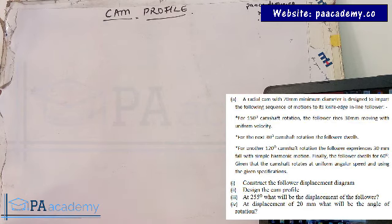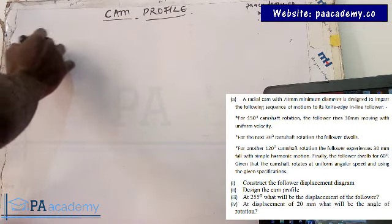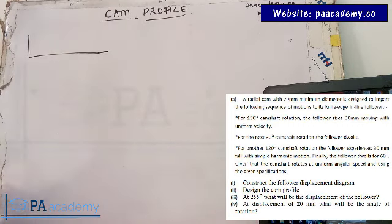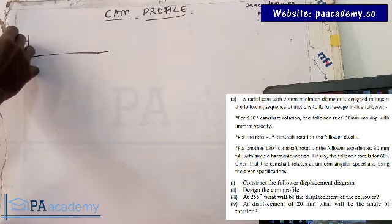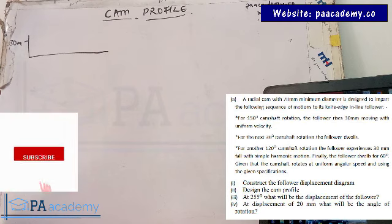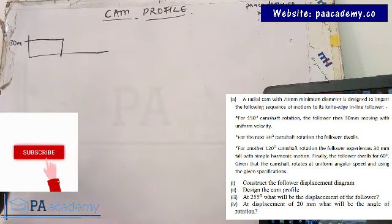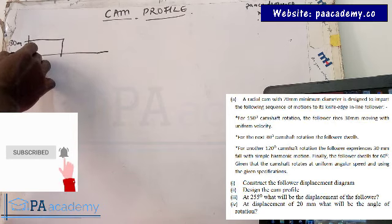The first thing you need to do is try to have a rough sketch of what the question is saying. It says for 150 degrees camshaft rotation, the follower rises 30mm with uniform velocity. So that means for 30mm — let's take this to be our 30mm — it rises for 30mm over 150 degrees of rotation with uniform velocity. From here to here, it's a straight line.